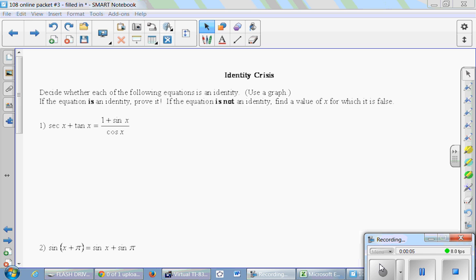Decide whether each of the following equations is an identity. Use a graph. If the equation is an identity, prove it. If the equation is not an identity, find a value of x for which it is false.